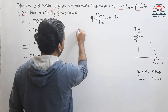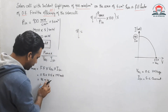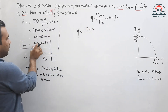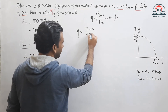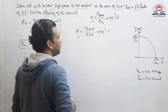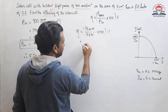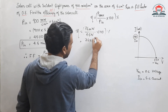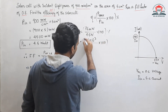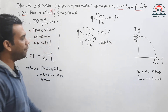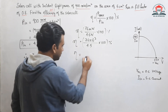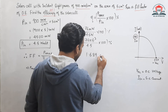Now putting these values into the efficiency formula: eta = P max / P input × 100. P max is 76 milliwatt (converted to 76 × 10⁻³ watt) and the total incident power is 4.5 watt. Calculating this gives an efficiency of 1.689 percent.